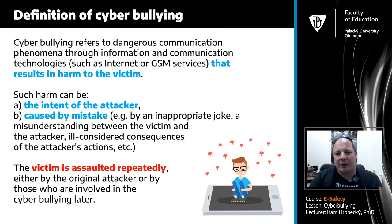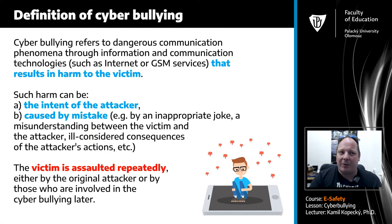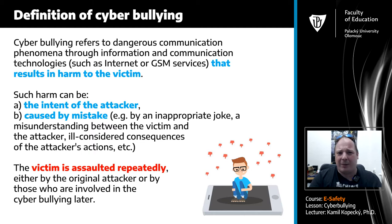Cyberbullying refers to dangerous communication phenomena through information and communication technology such as internet and mobile phones that results in harm to the victim. It's important to say that cyberbullying results in harm — there's harm to the victim — and such harm can be the intent of the attacker or could also be caused by mistake, for example a bad joke. Children will do bad jokes at school, record some video or photos which are shared through the internet.